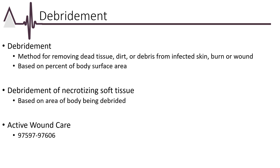Debridement is a method for removing dead tissue, dirt, or debris from infected skin, burns, or wounds. Debridement codes are billed based on percentage of body surface area involved or debrided. The size is listed by up to a certain percentage of body surface area with add-on codes that state each additional percentage of body surface area or part thereof. The guidance states that debridement of a single wound should be reported to the deepest level of tissue removed, whether that be subcutaneous, muscle and fascia, or bone. In multiple wounds, the surface area of the wounds debrided at the same level should be added together. Do not combine or add the surface areas of wounds from different levels. Note that the debridement codes start at the subcutaneous level; tissue debrided only at the epidermis or dermis level are reported using active wound care management codes from the medicine section.